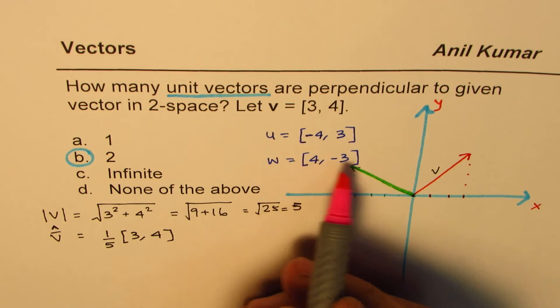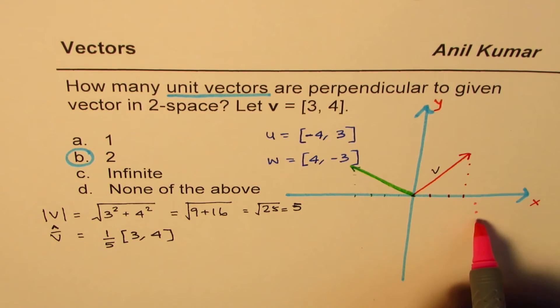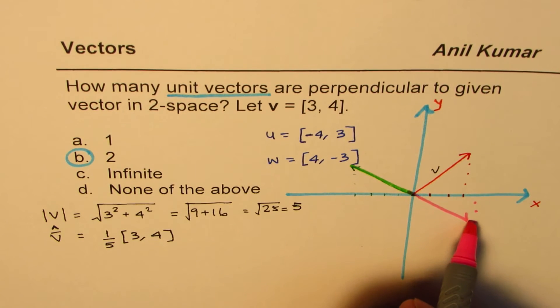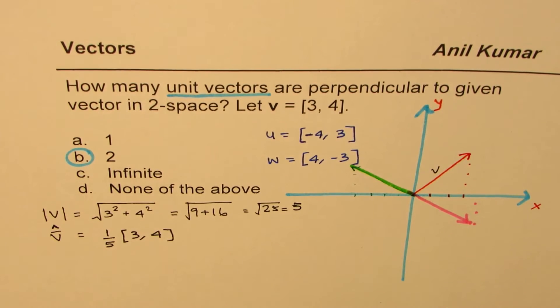The other vector could be [4, -3]. So 4 and then 1, 2, 3. You will find that that vector is kind of like this.